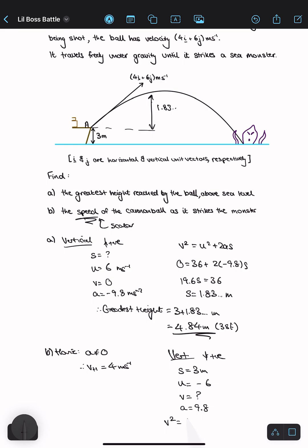If I do v squared equals u squared plus 2as again, I get that v squared is equal to 94.8. And I'm going to leave the answer as v squared because then I have to use Pythagoras in the last stage.